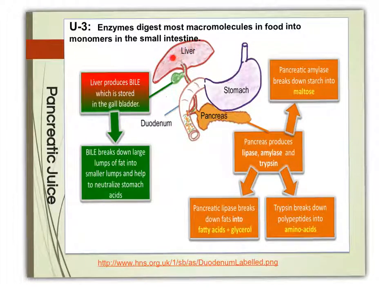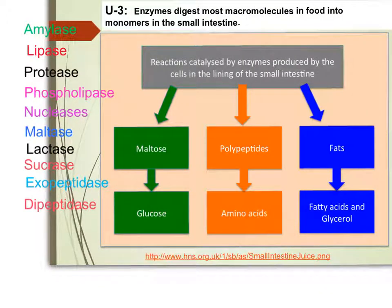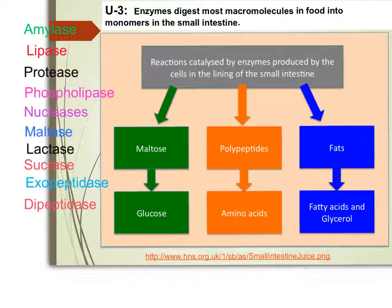The liver produces bile, which is stored in the gallbladder. This bile, through the bile duct, is put into the small intestine where it emulsifies fat. In the small intestine, intestinal glands also produce a number of enzymes: amylase converts starch into maltose, then maltase converts maltose into glucose; proteases convert polypeptides into amino acids; and lipase converts fats into fatty acids and glycerol.